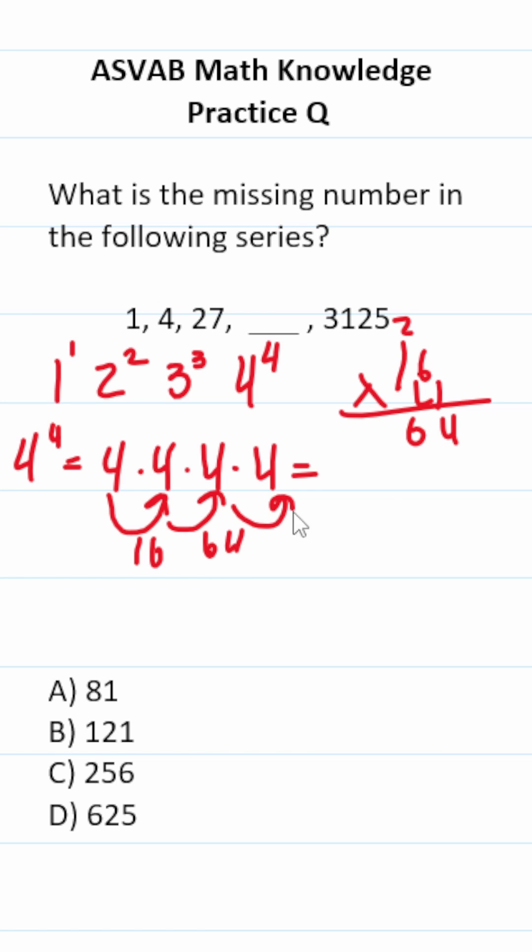So this becomes 64 times 4. Once we work this out, we'll have our answer. 4 times 4 is 16. Carry a 1. 6 times 4 is 24. Plus 1 is 25. So this is C.